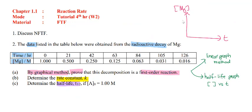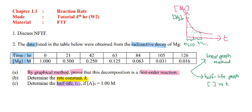If you use the half-life graph method instead, plot concentration of magnesium versus time to get a decay curve. The initial concentration is at the top. Half of it gives the first T-half; half of that value again gives the second T-half. Compare the first and second T-half — if they are equal, this confirms it is a first order reaction.